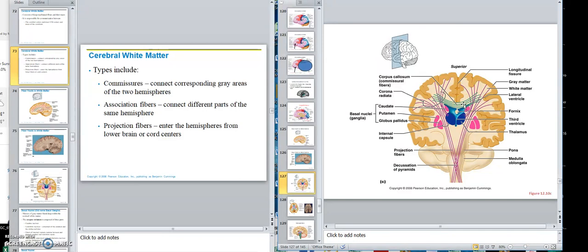Association fibers. Now don't get confused with association areas. Association fibers are axons and that's when one side communicates with the other. So let's say the frontal lobe communicates with the occipital lobe in the left hemisphere.